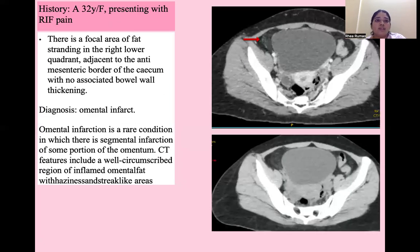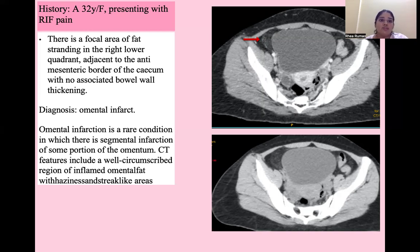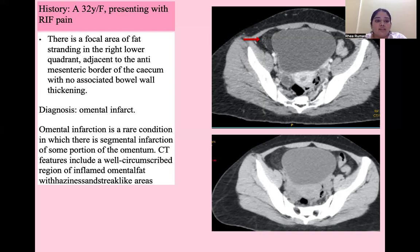Next is a case of a 32-year-old female presenting with right iliac fossa pain. There is a focal area of fat stranding in the right lower quadrant adjacent to the antimesenteric border of the cecum with no associated bowel wall thickening — suggestive of omental infarct. It is a rare condition in which there is segmental infarction of a portion of the omentum. CT features include a well-circumscribed region of inflamed omental fat with haziness and streak-like areas.